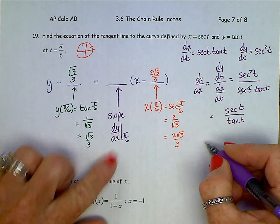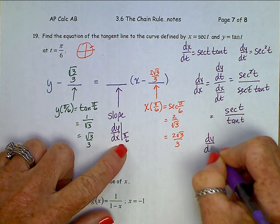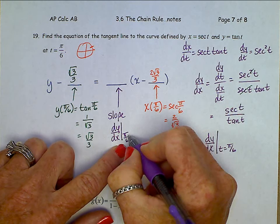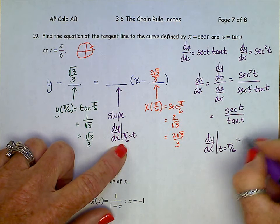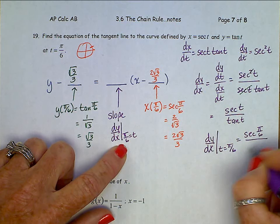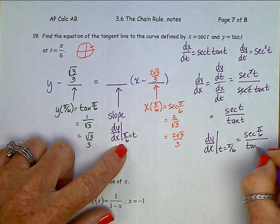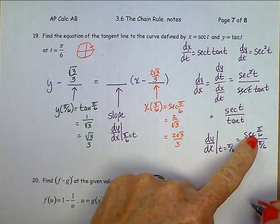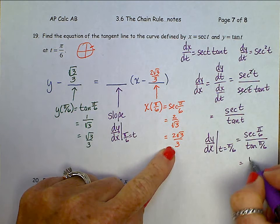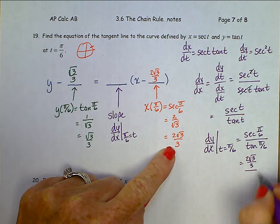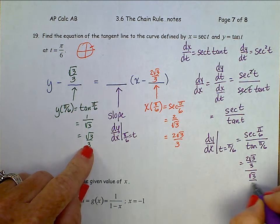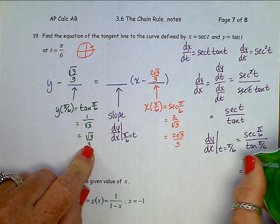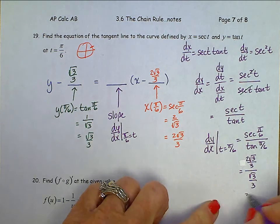We'll have to go back and evaluate this at pi over 6. That's going to be the secant of pi over 6 over the tangent of pi over 6. Secant pi over 6 we figured out was 2 square root 3 over 3, tangent of pi over 6 is square root 3 over 3, and we end up with just 2. There's the slope.